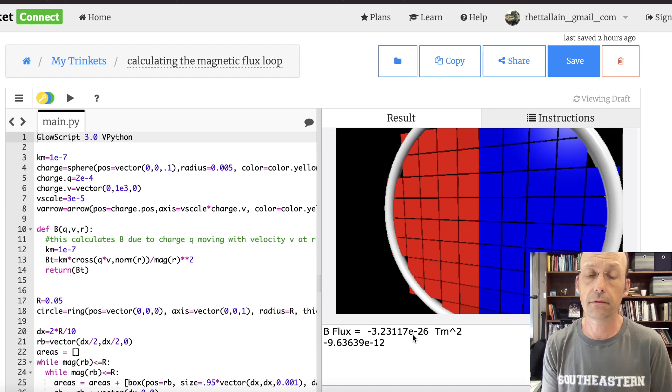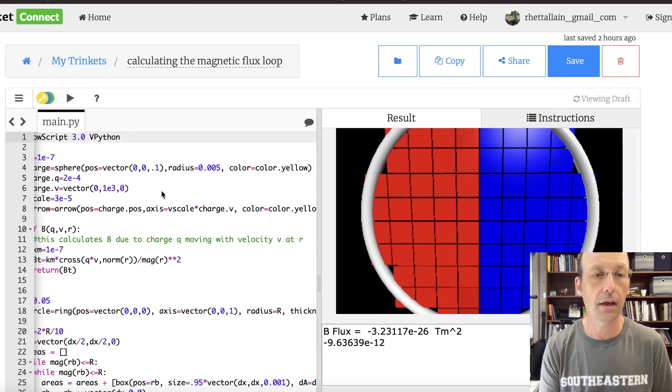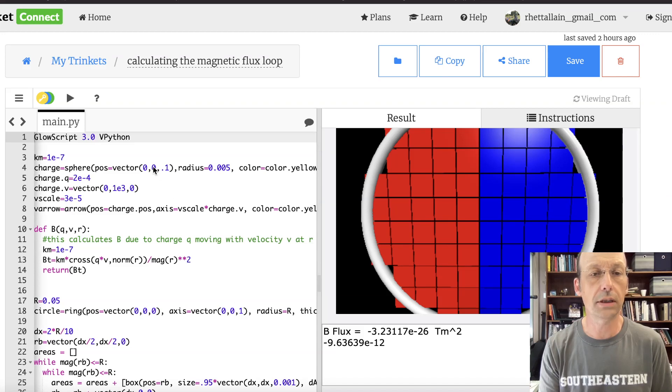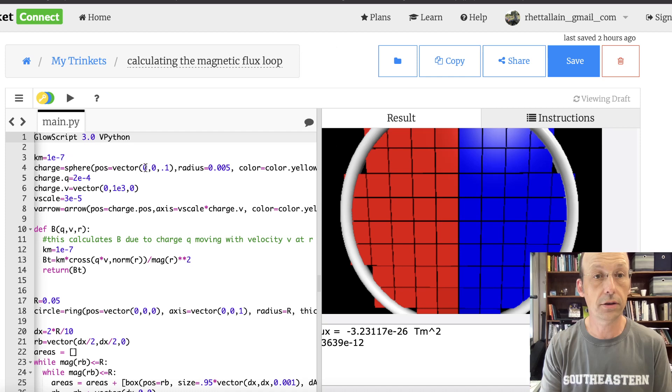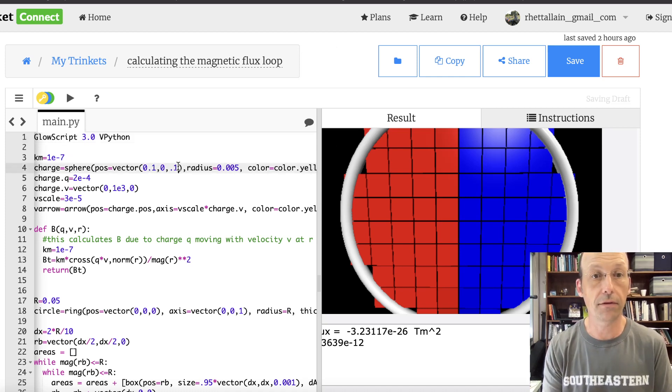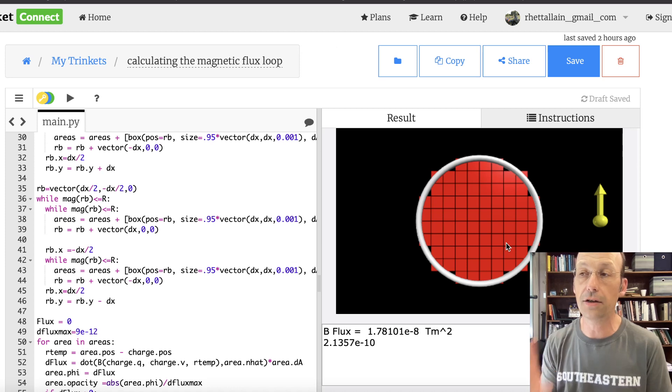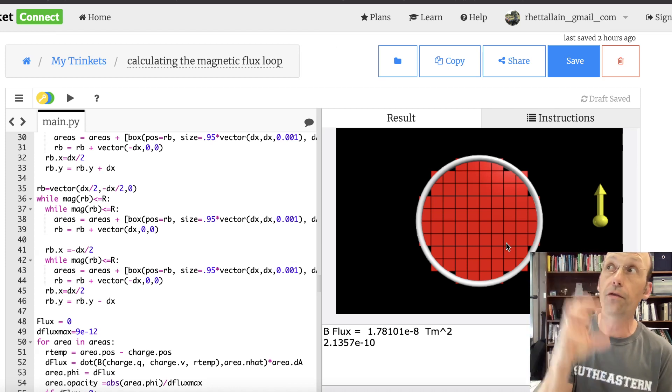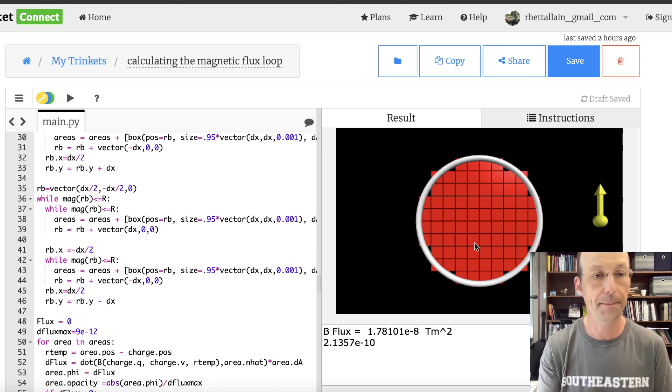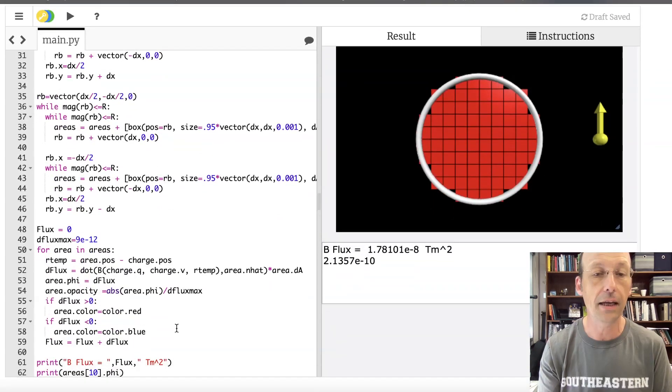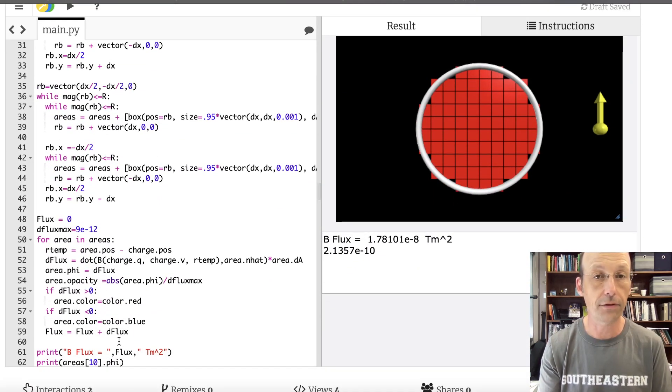Each of these squares represents the magnetic flux in those squares where I can assume that if the square size is small enough, then the flux through that square is constant. So I can say B dot n hat dA to calculate the flux. Let me review real quick about this magnetic flux idea and show you how I'm going to do it a different way. This new way I'm going to do it is with a Monte Carlo calculation.